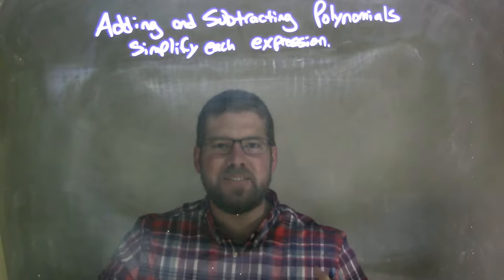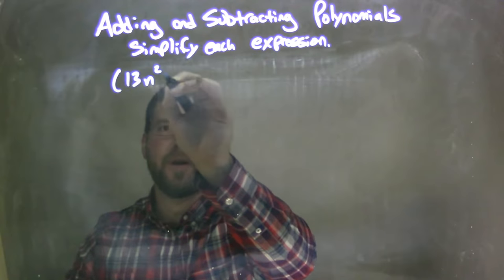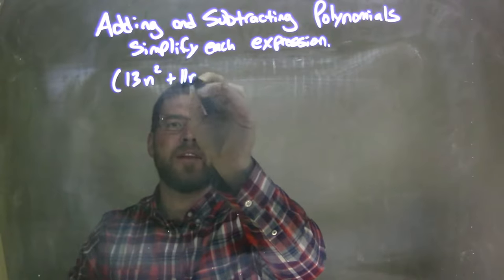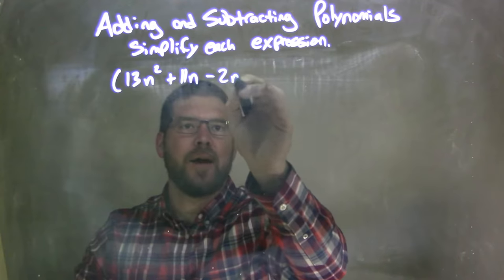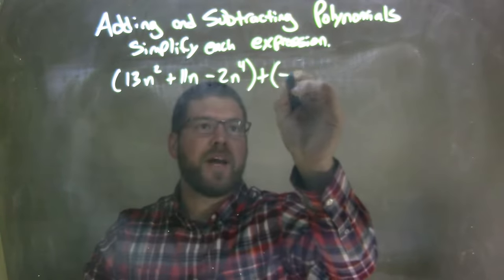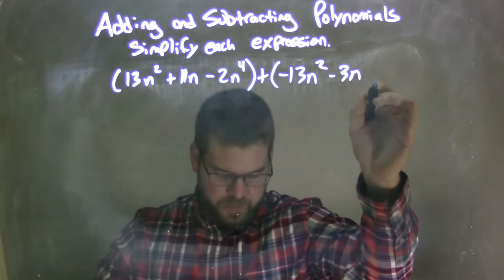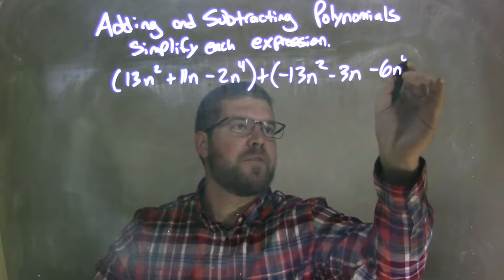So if I was given this polynomial 13n squared plus 11n minus 2n to the fourth plus parentheses negative 13n squared minus 3n minus 6n to the fourth.